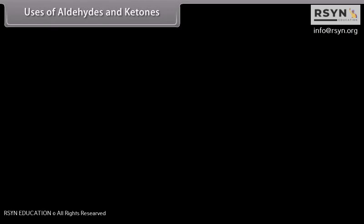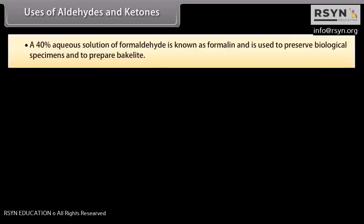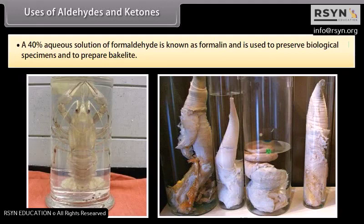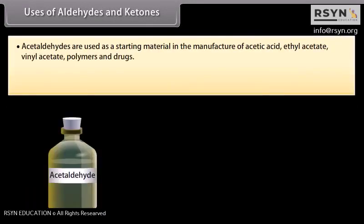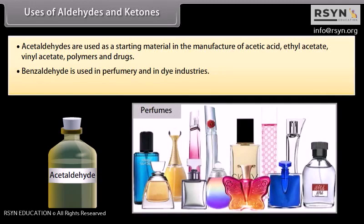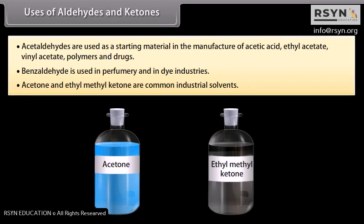Uses of aldehydes and ketones: a 40% aqueous solution of formaldehyde is known as formalin and is used to preserve biological specimens and to prepare bakelite. Acetaldehyde is used as a starting material in the manufacture of acetic acid, ethyl acetate, vinyl acetate, polymers, and drugs. Benzaldehyde is used in perfumery and in dye industries. Acetone and ethyl methyl ketone are common industrial solvents.